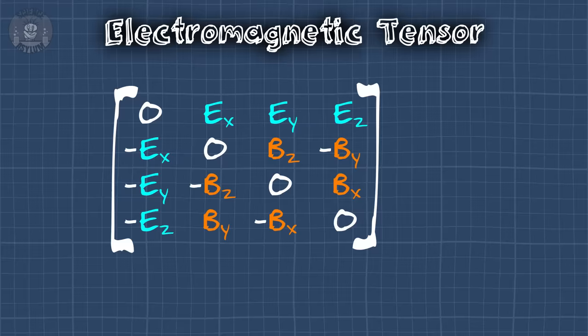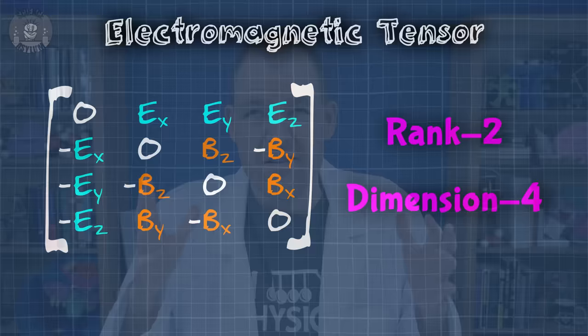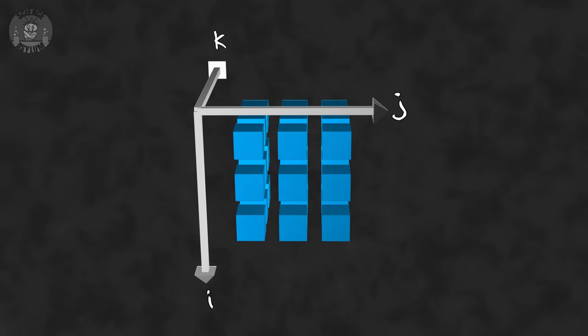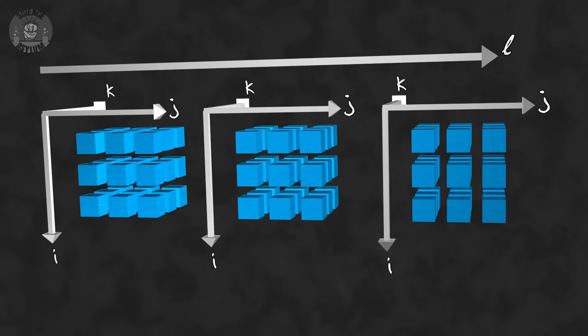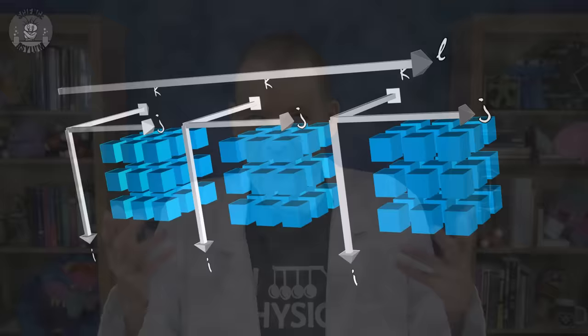This notation starts to fall apart with higher rank tensors. A rank 3 tensor requires three pieces of information to find a component. While this is still technically a matrix, the math operations aren't very obvious. It gets even worse with rank 4 tensors — certainly interesting to look at, but not very useful. Honestly, matrix notation is kind of like a security blanket; it's only there to make people feel more comfortable when they're first learning about tensors. So what are we supposed to use instead? Index notation!